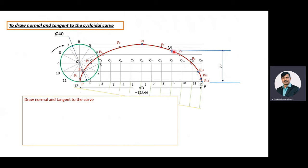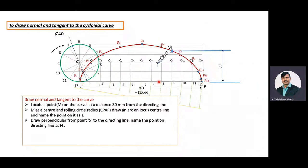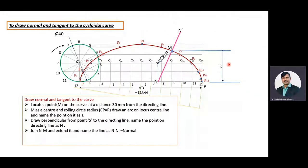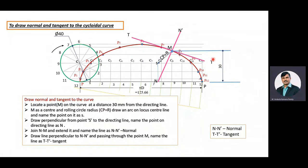With M as center and rolling circle radius CP as radius, draw an arc on the locus of the path centerline. Name the intersection point as S. With S as center, draw a perpendicular to the directing line, which cuts the directing line at point N. Join N and M and extend it — name the other end N'. Here NN' is the normal. Draw a line perpendicular to NN' passing through M — this is the tangent TT'.